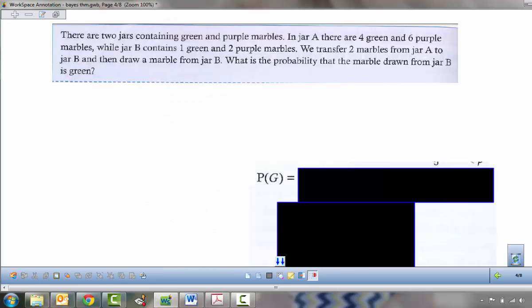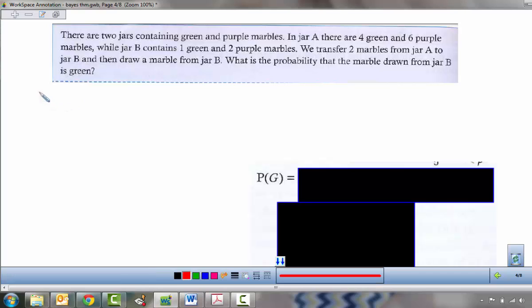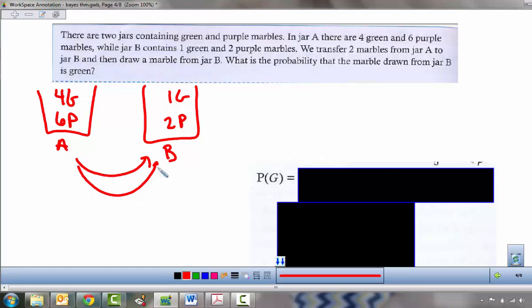So, new example, we have two jars. They contain green and purple marbles. So here's jar 1, and here's jar 2. In jar A, we have four green and six purple. And in jar B, we have one green, two purple. And we transfer two marbles from jar A to jar B. So we take one marble, and then a second marble, and we put them from jar A into jar B.